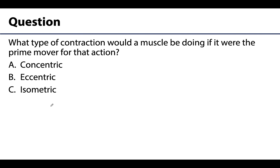So let's think through these concepts with a question. What type of contraction would a muscle be doing if it were the prime mover for that action? Is it shortening, like what happens for a concentric contraction? Or is it lengthening, like an eccentric contraction? Or is it no movement, like an isometric contraction? Hopefully you are thinking concentric contraction or muscle shortening. Eccentric contractions or lengthening would be more antagonistic, whereas isometric contractions would be more characteristic of fixators.